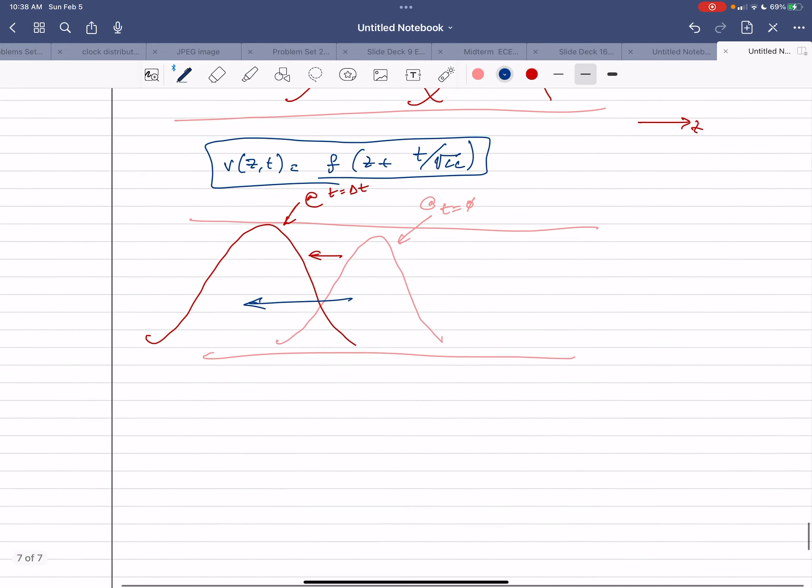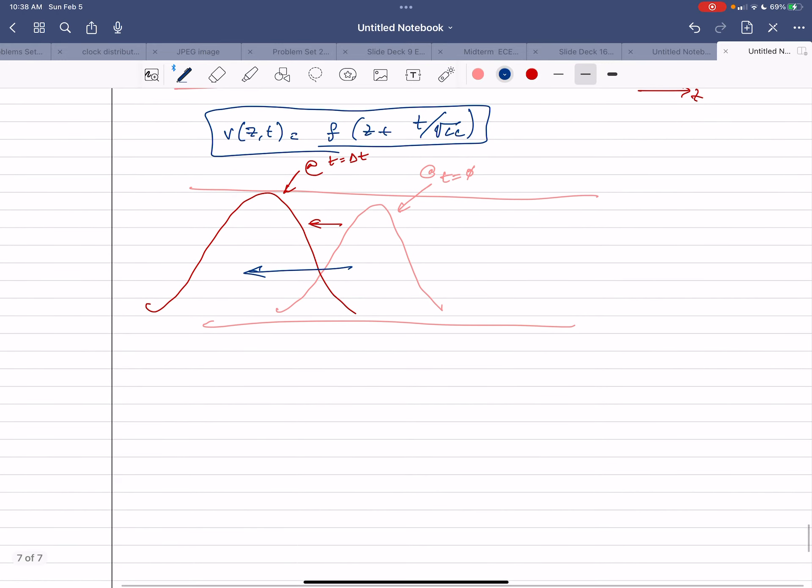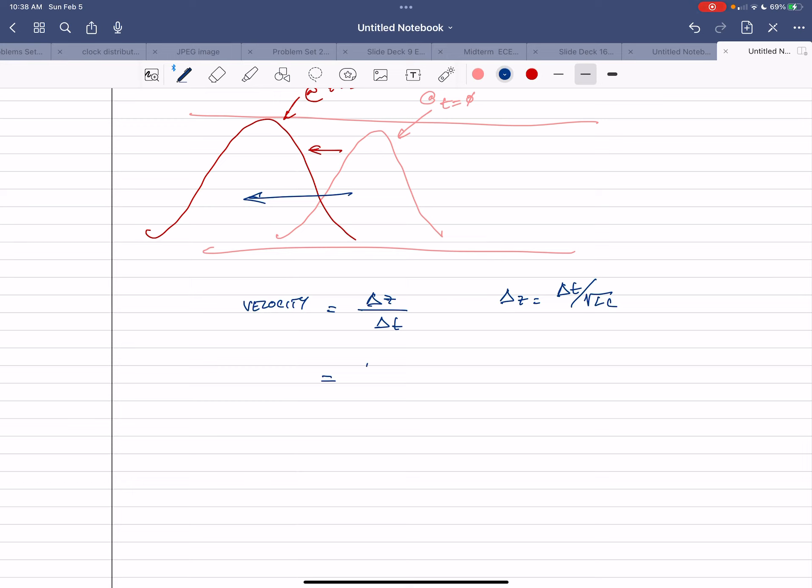And in fact, in both cases, the velocity of this waveform is going to be delta z over delta t. Since delta z is equal to delta t over square root of LC, then we end up with delta t over square root of LC over delta t is equal to one over square root of LC. So this is velocity.